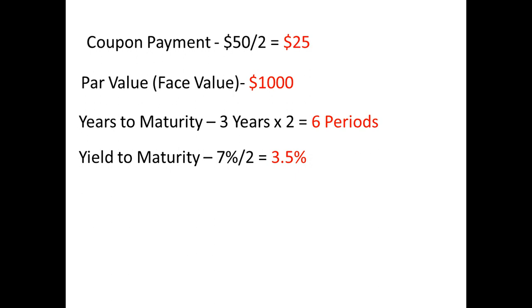Finally, we would divide the yield to maturity by 2 and get the yield to maturity for the period, so it would be 7% divided by 2, which gives us 3.5%.